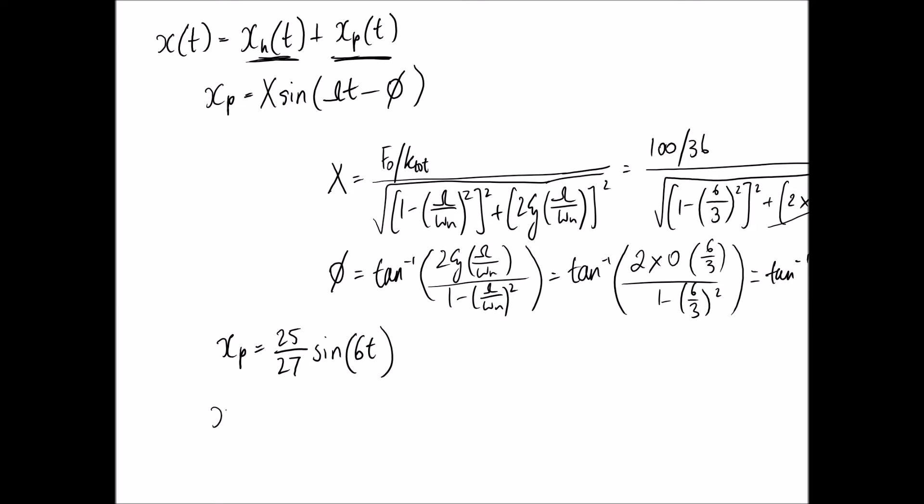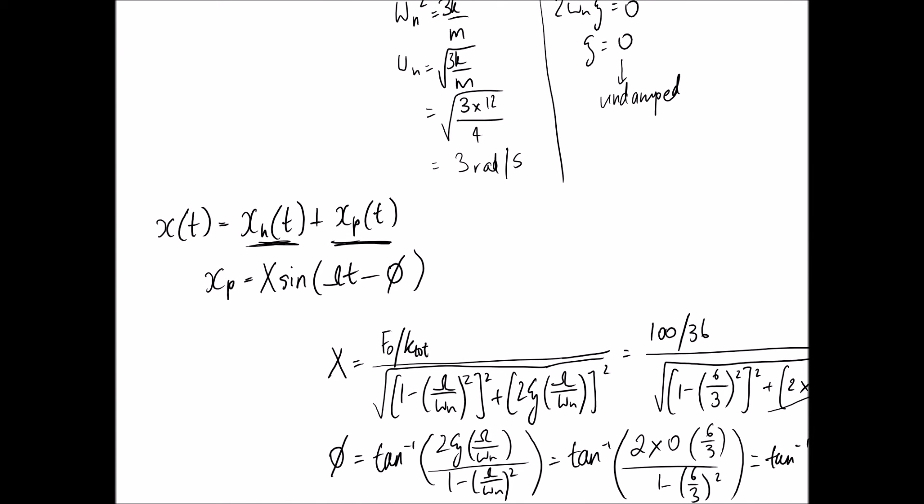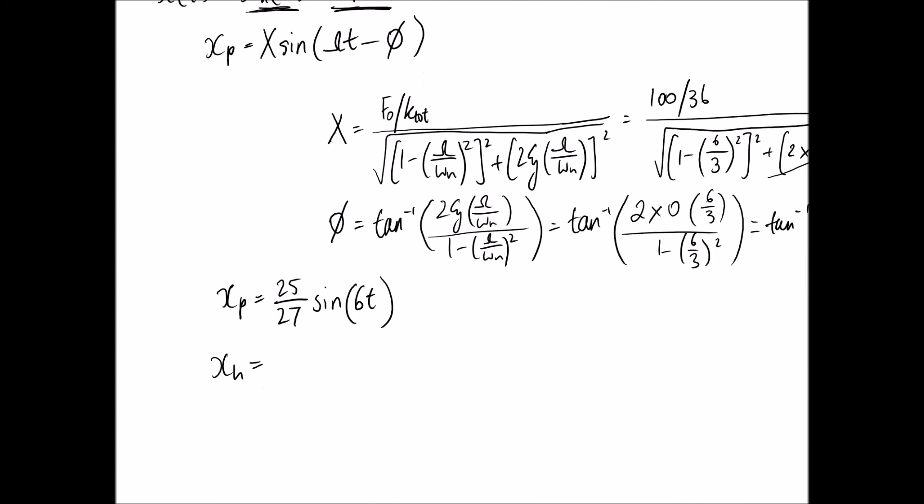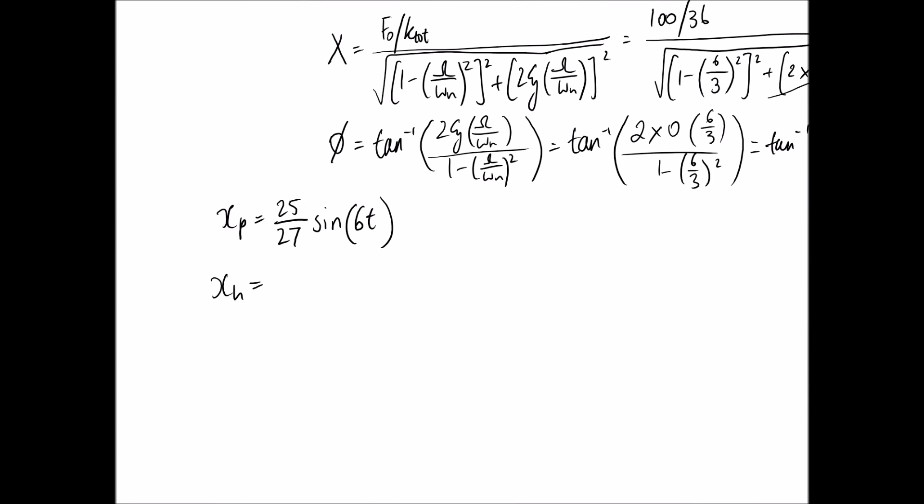Now that we've worked out x of p, we can go back and work out the harder one, which is xh. Because we're going to need to work out the constants in that equation. xh relates back to your free vibration. So you need to look at your damping ratio and pick the appropriate equation. We have a damping ratio of 0, which is undamped motion. So looking back at your list of formulas, you can pick this one off. It's going to be a cos omega n t plus b sine omega n t. Remember that there's a different form of this. If you prefer, you can use the form that looks something like a sine omega n t plus phi, but I'm just going to stick with this first form here.